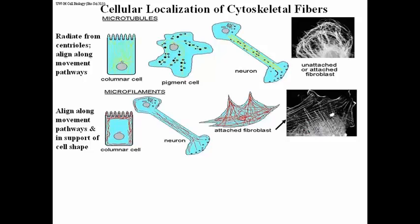Here is a fluorescence micrograph using fluorescent antibodies localizing actin bundles in cells. Look at the attached fibroblast in the cartoon and look at the fluorescence micrograph — you get a sense of these criss-crossing fibers that appear to penetrate the processes the cell is extending. Those pointy parts are processes being extended by the cell, and you see that in both the micrograph and the cartoon.